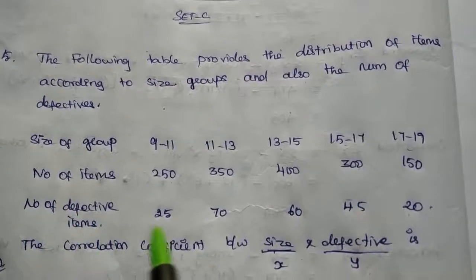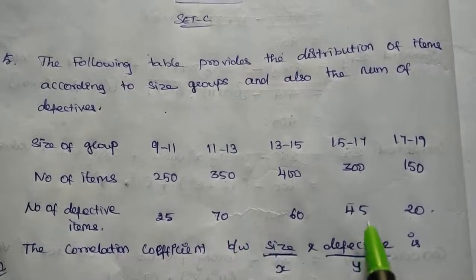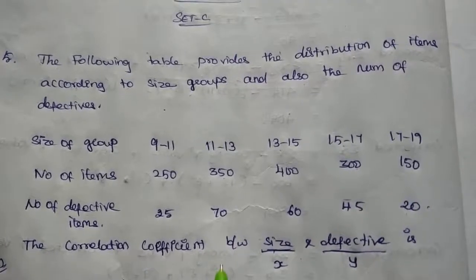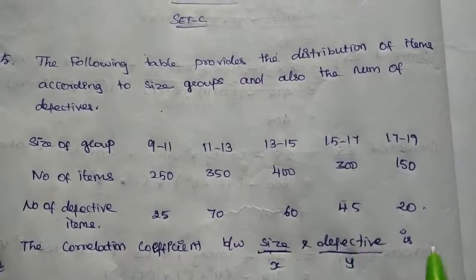And number of defective items: 25, 70, 60, 45, and 20. The correlation coefficient between size and defective is dash.